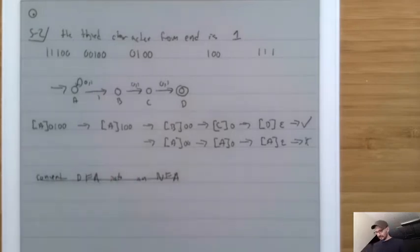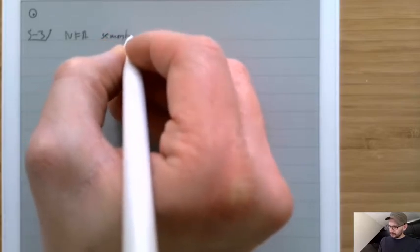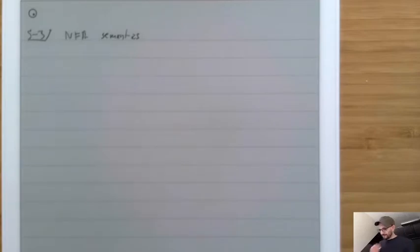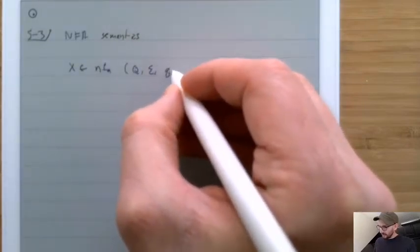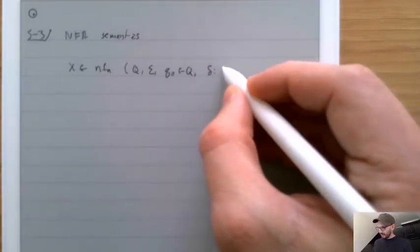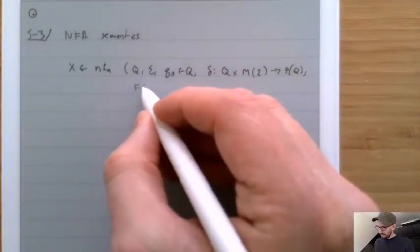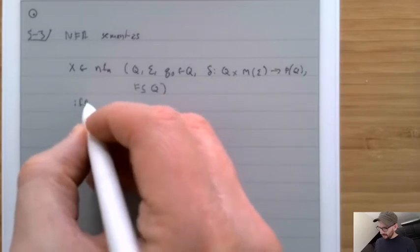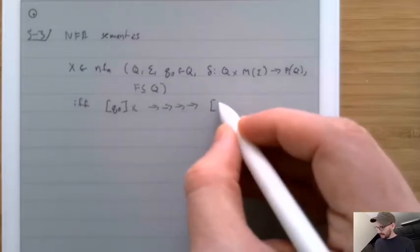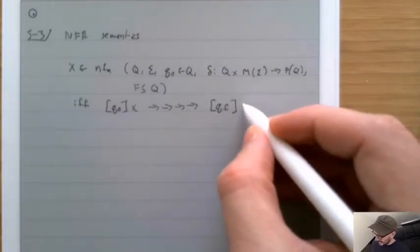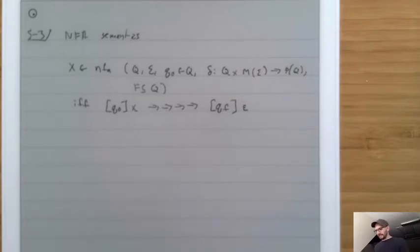We should define what it means to be accepted by an NFA — the NFA semantics. X is inside of an NFA (defined by Q, sigma, Q0, delta from Q × maybe-sigma → power set of Q, and F ⊆ Q) if and only if, starting from Q0 with string X, there is some path that leads to Qf with epsilon remaining.